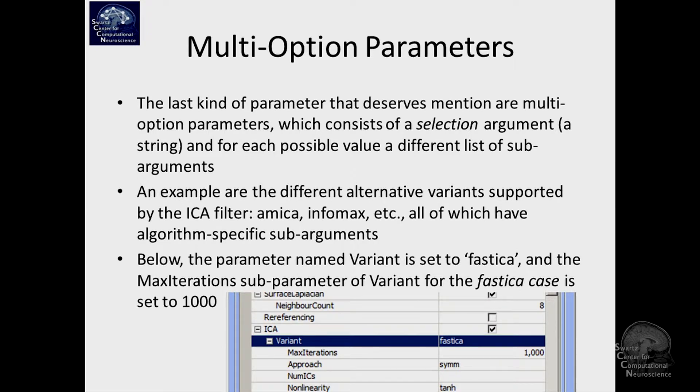There's a kind of parameter that we haven't talked about yet which is quite useful: parameters that allow you to pick multiple options with subparameters. A good example is independent component analysis. This is a very big part of BCI lab and a very strong area of the Swartz Center, and so we have lots of variants of this. In signal processing, the ICA, there's a subparameter named variant. It has subparameters itself, but importantly it can be set to fast ICA or infomax or emica or whatever. Fast ICA has different subparameters as emica and has different subparameters as infomax and so on.